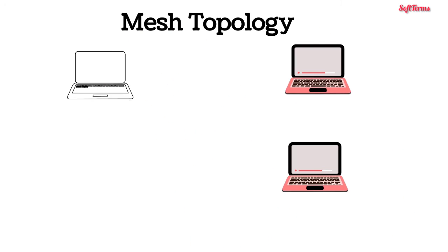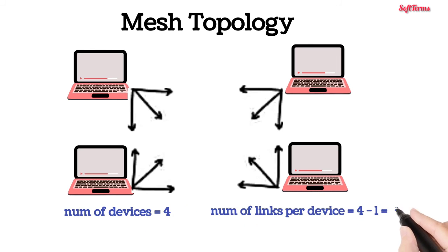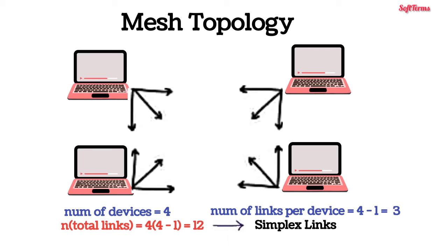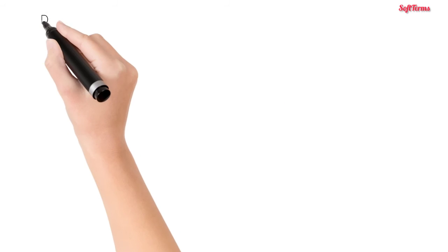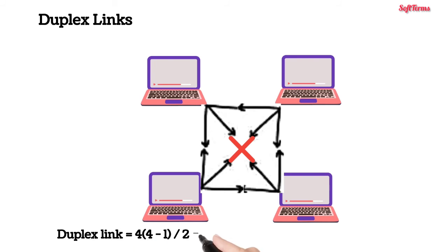Now we proceed towards mesh topology. In a fully connected mesh topology, each device has a point-to-point link to every device in the network. Therefore, if the number of devices is 4, each device has 4-1 = 3 links. The total number of links for 4 devices is 4×(4-1) = 12. Note that these are simplex links, where data can move in one direction only — so one link is used for sending and the other for receiving. Duplex links allow data to move in both directions, so we can replace two simplex links with one duplex link. Hence the total number of duplex links is 4×(4-1)/2 = 6.